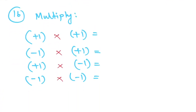Let's do one more. What happens when you multiply two numbers? Positive times positive gives positive, negative times positive gives negative, positive times negative gives negative, and negative times negative gives positive. When you multiply two negative numbers it becomes positive.